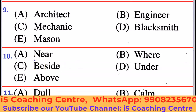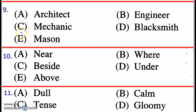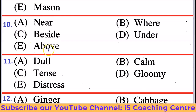Next, ninth example: Architect, Engineer, Mechanic, Blacksmith, Mason. All others are directly related to building construction, while a Mechanic may belong to any trade or job. Architect, Engineer, Blacksmith, and Mason are all related to the construction field. So the answer is Mechanic — Mechanic is the odd one out.